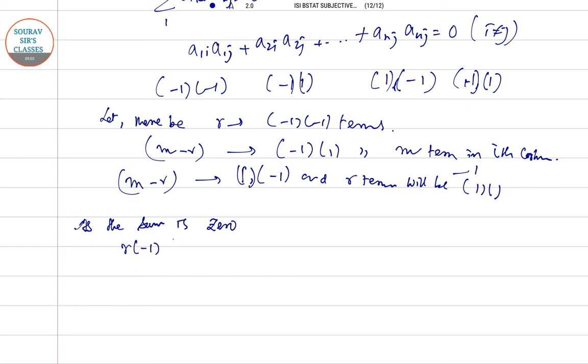That is r times minus 1 times minus 1 plus m minus r times minus 1 into 1, this is also 0. So 2r minus 2 into m minus r equal to 0.